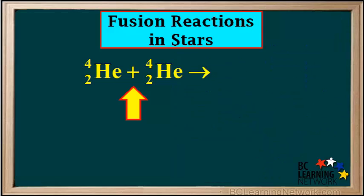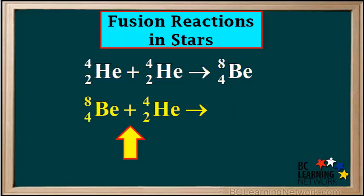In some older stars, where large amounts of helium have accumulated and the temperature is very high, two helium 4 nuclei can fuse and form a nucleus of beryllium 8. Notice how both charge and mass are conserved here. This beryllium 8 nucleus can also fuse with another helium nucleus to form a single nucleus of another element.